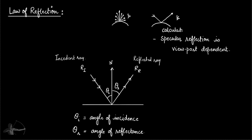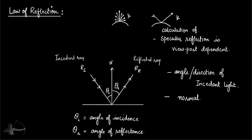In the calculation of specular reflection there will be at least three variables: one is the angle or direction of the incident light, second is the normal, and third will be the angle and direction of the eye or viewpoint — not the reflected ray itself, since we calculate that from the incident ray.